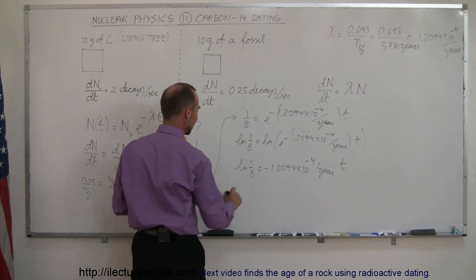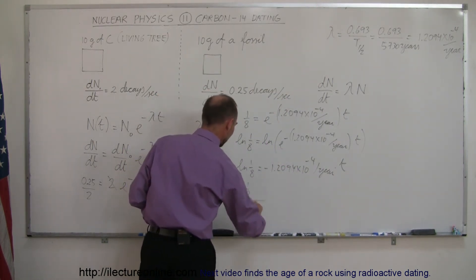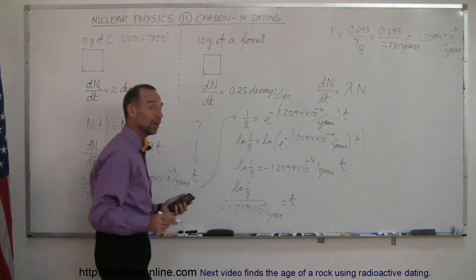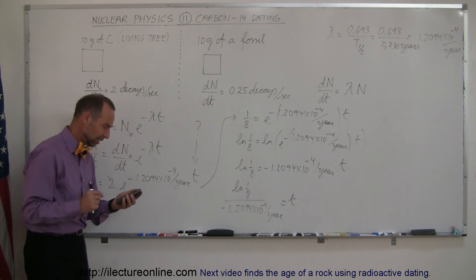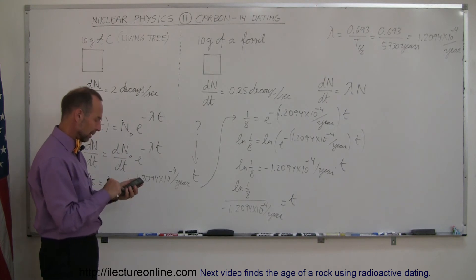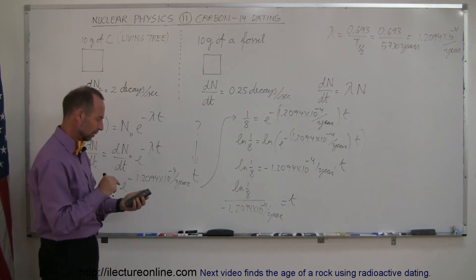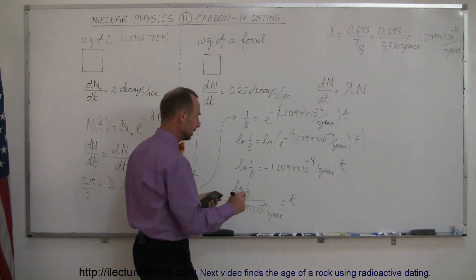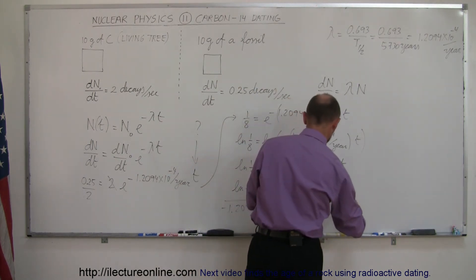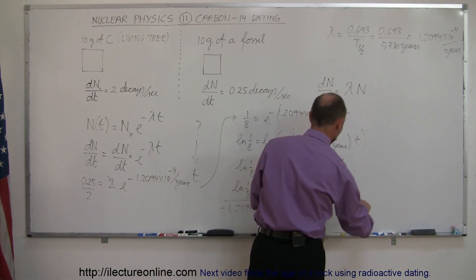And dividing both sides by this quantity, we have the natural log of 1/8 divided by minus 1.2094 times 10 to the minus 4 per year is equal to t. And all we have to do now is grab our calculator, plug those numbers in. So take the inverse of that, multiply that times 1 divided by 8, and take the natural log of that. The answer I get is that the time elapsed or the age of that fossil is equal to 17,194 years.